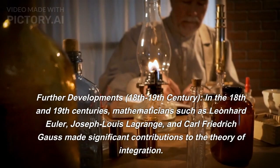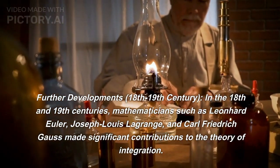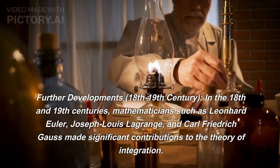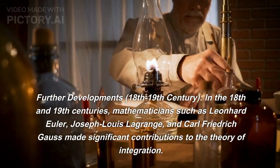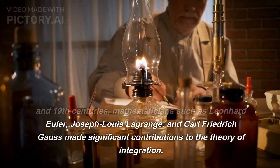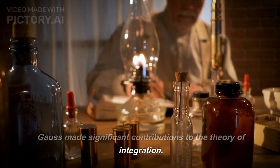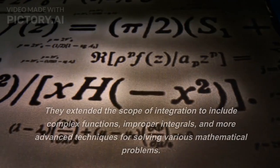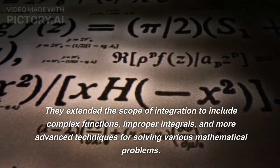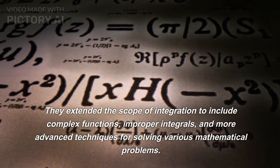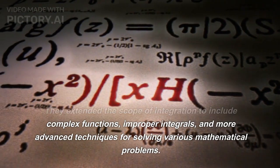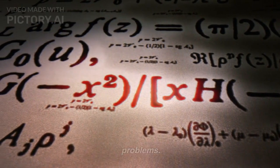Further developments, 18th-19th century. In the 18th and 19th centuries, mathematicians such as Leonard Euler, Joseph Louis Lagrange, and Karl Friedrich Gauss made significant contributions to the theory of integration. They extended the scope of integration to include complex functions, improper integrals, and more advanced techniques for solving various mathematical problems.